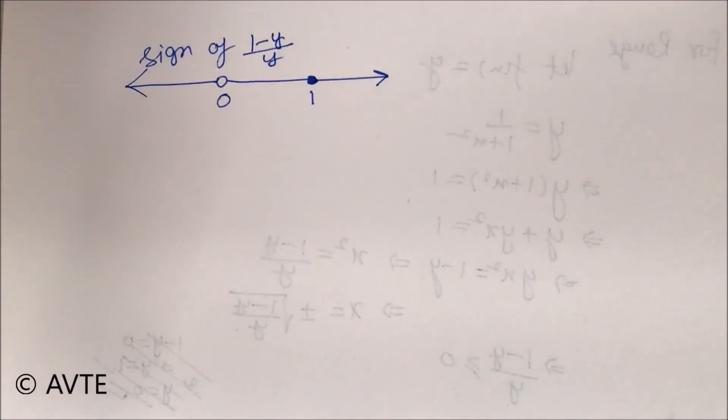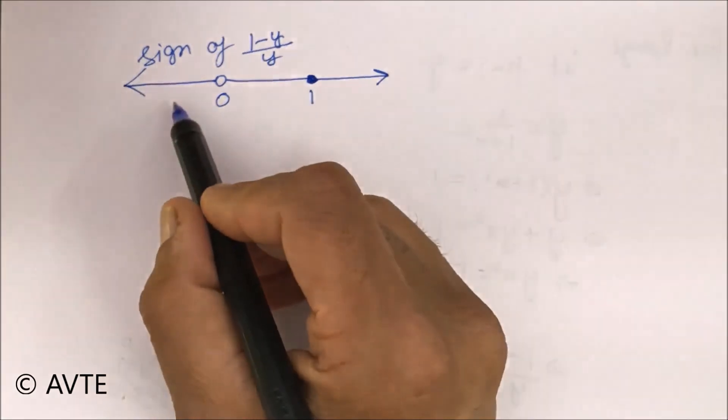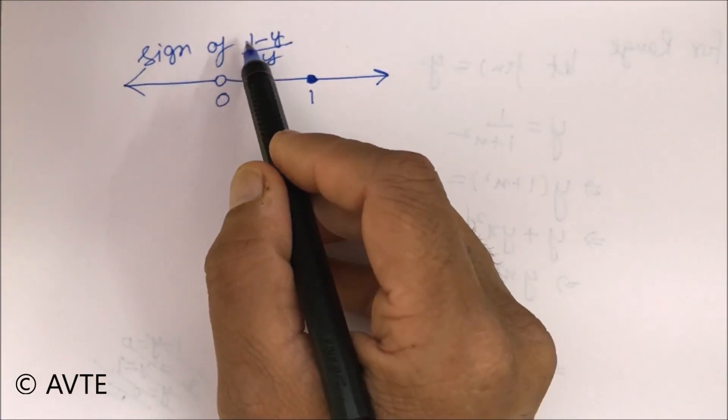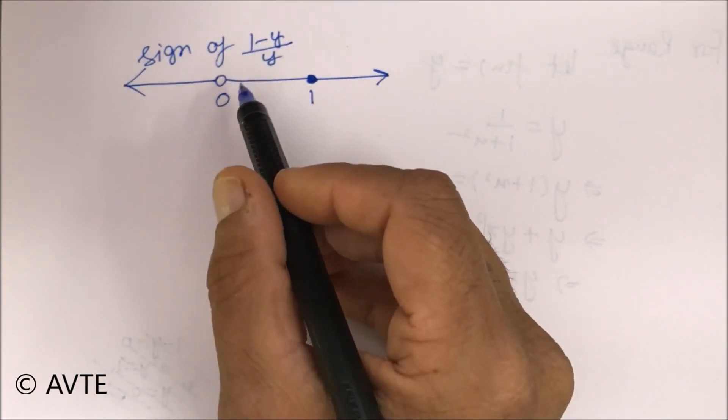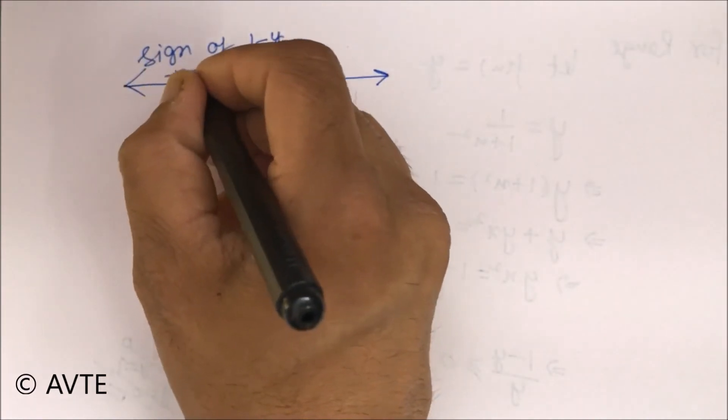Now take any number from minus infinity to 0. You will see that, say if I put minus 5, the numerator will turn to positive but the denominator will be negative. So the net effect will be negative.